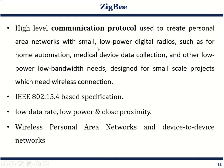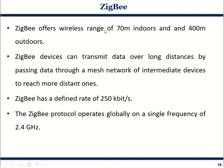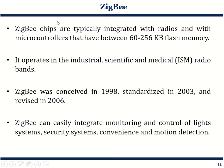Since Zigbee operates over a very low power and small area, it has a low data rate, low power consumption, and works in close proximity. It is essentially a wireless personal area network connecting device to device. For indoor use, Zigbee offers a range of 70 meters, and 400 meters for outdoor range. Zigbee can transmit data over a long distance only if intermediate devices create a mesh network. Zigbee has a defined data rate of 250 kbits per second.